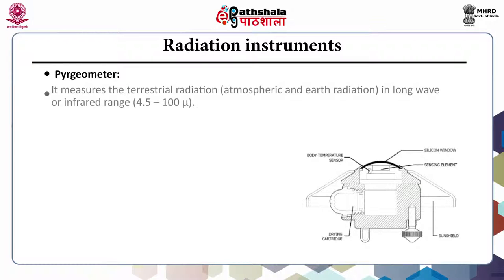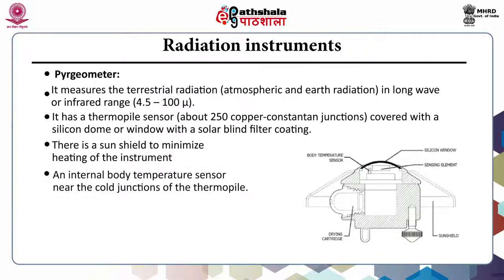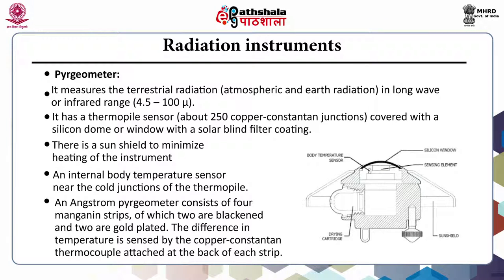Next comes the pyrgeometer. It measures terrestrial radiation — that is, atmosphere and earth radiation — in the long wave or infrared range, that is 4.5 to 100 microns. It has a thermopile sensor with about 250 copper-constantan junctions. This is covered with a silicon dome or window with a solar blind filter coating. There is a sun shield to minimize heating, and an internal body temperature sensor placed near the cold junction of the thermopile. In the Angstrom pyrgeometer, there are four manganin strips, of which two are blackened and two are gold plated.